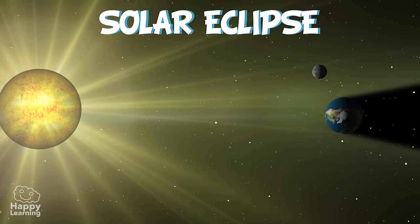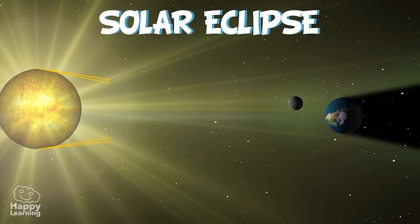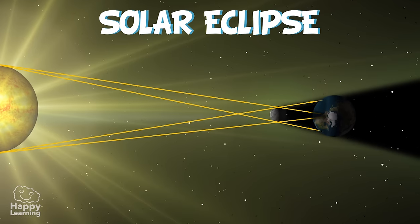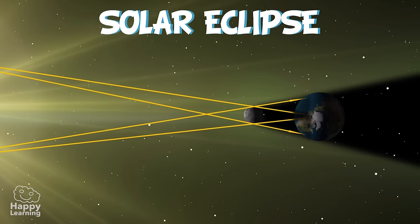Solar eclipses only occur when there is a new Moon, and it is seen when the Moon is between the Earth and the Sun. The Moon hides all the Sun's light.